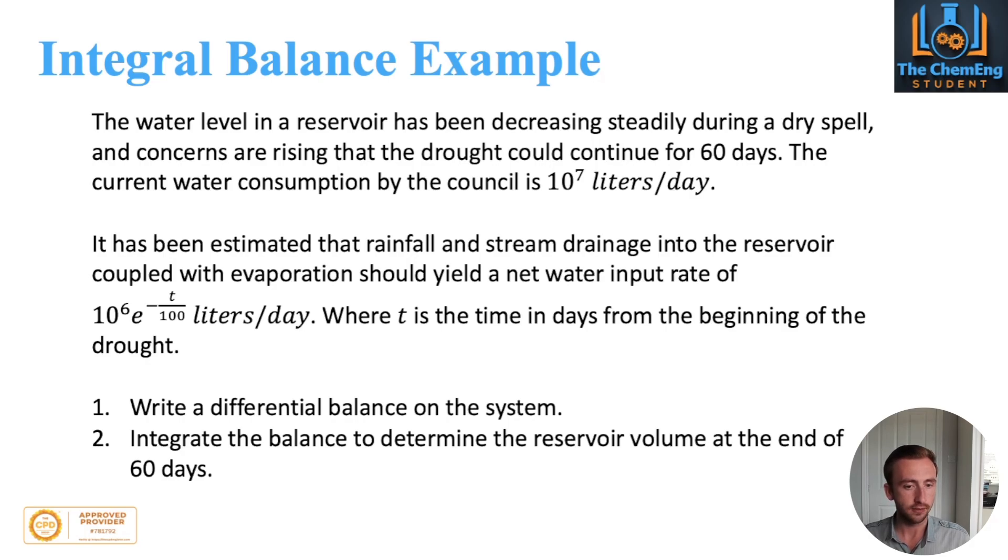And it has been estimated by experts that with the rainfall and the stream drainage into the reservoir, coupled with evaporation of the water, should yield a net water input rate of approximately 10 to the power 6 multiplied by the exponential to the power minus t over 100. And the units are of course liters per day. Now t is the time given in days at the beginning of the drought.